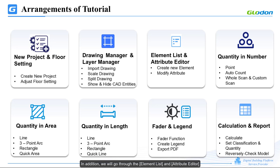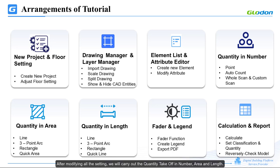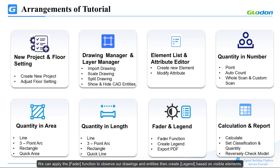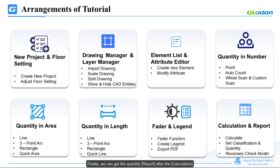In addition, we'll go through the Element List and Attribute Editor. After modifying all the settings, we'll carry out the quantity takeoff in Number, Area, and Length. We can apply the Fader function to observe our drawings and entities, then create a legend based on visible elements. Finally, we can get the quantity report after the calculation.